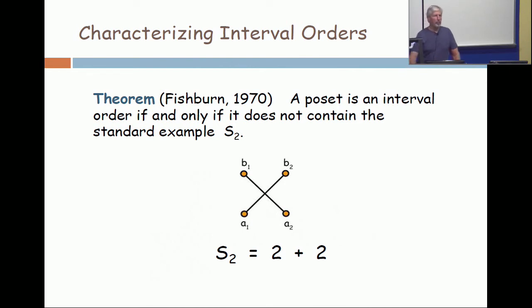Now, we're actually going to prove that theorem. All right, let's do it. So it's an if and only if. I have to show you that if a poset is an interval order, it doesn't contain 2 plus 2, and then I have to show you that if a poset does not contain 2 plus 2, it is an interval order. I have to do both directions.